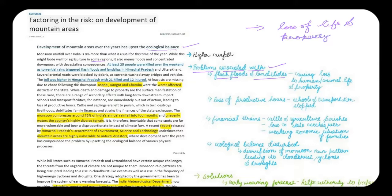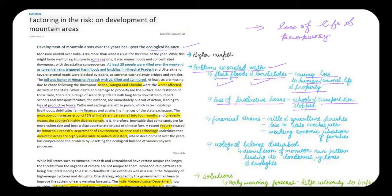Schools and transport facilities are immediately put out of action during such events, leading to a loss of productive hours. All the roads blocked with debris mean transportation cannot take place easily. For example, if a vehicle normally travels from Delhi to Himachal in four hours, because of landslides or heavy downpour that vehicle cannot move — resulting in a direct loss of productive hours.